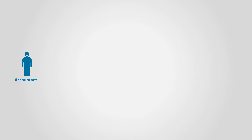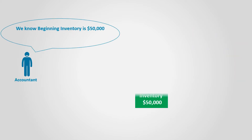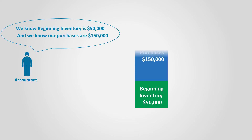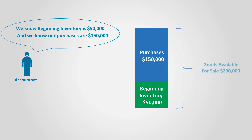We could calculate the goods available for sale, as we know the beginning inventory of $50,000 and purchases of $150,000. So the goods available for sale is equal to $200,000.